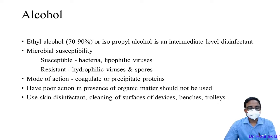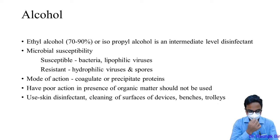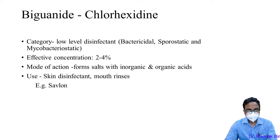Alcohols — mostly used nowadays as alcoholic rubs — include ethyl alcohol or isopropyl alcohol at 70–90%. They are intermediate-level disinfectants. Susceptible organisms: bacteria and lipophilic (enveloped) viruses. Resistant organisms: non-enveloped viruses, spores, Mycobacterium. Mode of action: coagulate or precipitate proteins. They have poor action in the presence of organic material — use soap and water for hand washing in that case. Used as skin disinfectant, antiseptic lotion, and for cleaning surface devices and benches.